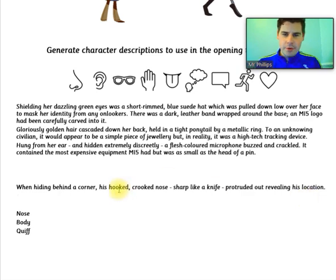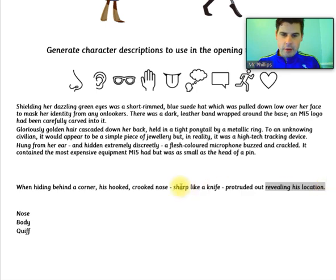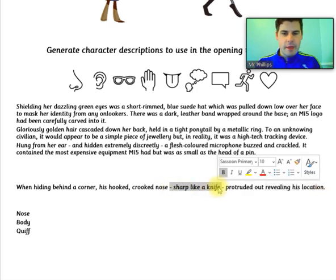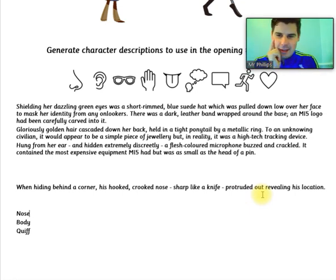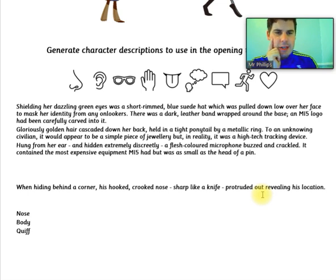Because there we've got loads of different clauses: we've got a front adverbial, a non-finite clause, and a bit of parenthesis — because the main clause is 'his hooked, crooked nose protruded out', and then we've added all these little bits onto it. I think that's pretty good. When hiding behind a corner, his hooked, crooked nose, sharp like a knife, protruded out, revealing his location.